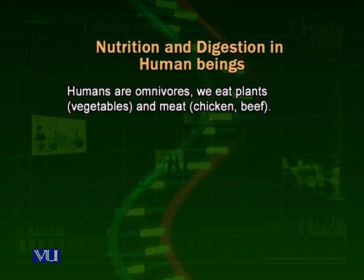We take the example of the human digestive system to describe and explain all of these processes. Human beings, as we know, are omnivores. We eat vegetables — some of us are totally vegetarian, some of us are mainly meat eaters — but most of us eat both things, or maybe a combination of these.